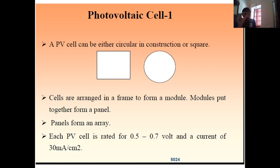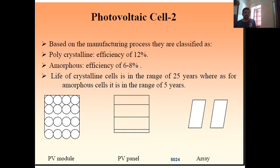Modules put together form a panel. A number of panels connected in parallel can form an array. Each PV cell, a single circular or square geometry PV cell, is rated for 0.5 to 0.7 volt and a current of 30 milliamps per centimeter square. The solar cells are classified based on the manufacturing process as polycrystalline, amorphous, or monocrystalline cells.